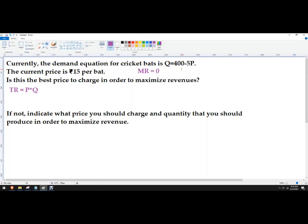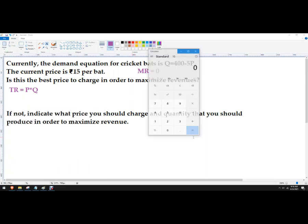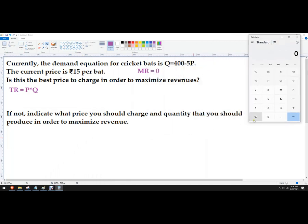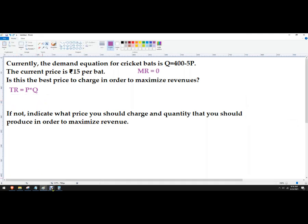In this case we've got a price of 15 rupees. We're going to plug that in there and see how many bats we're going to sell with that rupee price. So just plug it in there. So it's five times 15 rupees. So that's 75. So 400 minus 75 is 325.